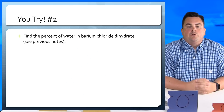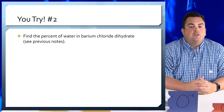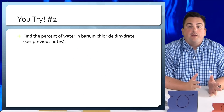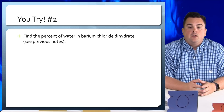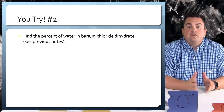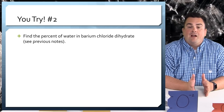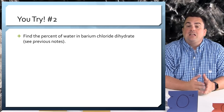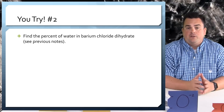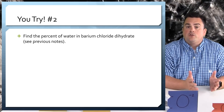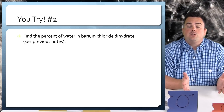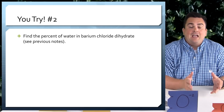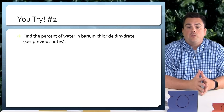You try number two. Find the percent of water in barium chloride dihydrate. You did this in your notes, so go back to page 19 for all the data you need. Make sure to show the formula, proper substitution, and your answer with units.